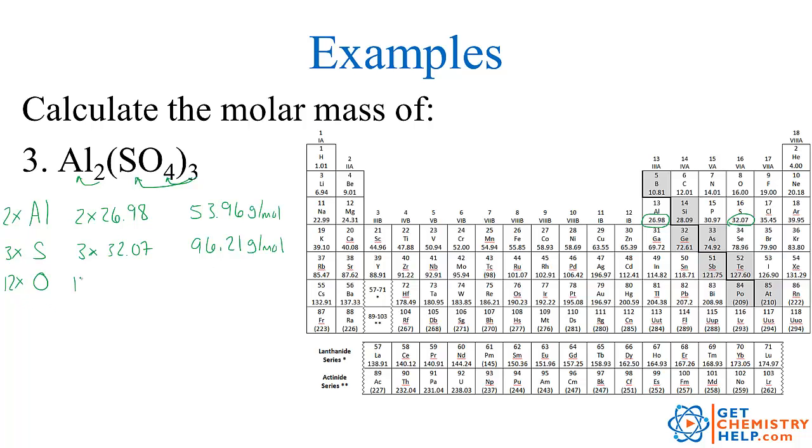And 12 oxygens. Again we've seen earlier oxygen has a mass of 16.00. So 12 times 16.00. That's a total of 192.00. So we add up all the different elements and the total molar mass is 342.17 grams per mole.